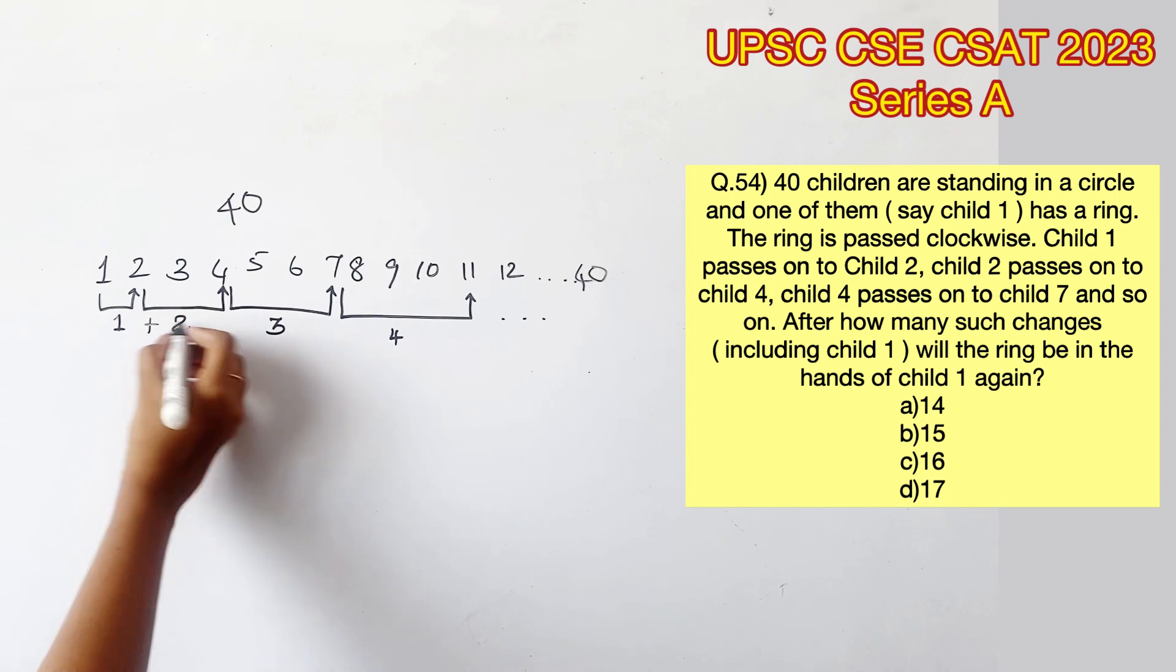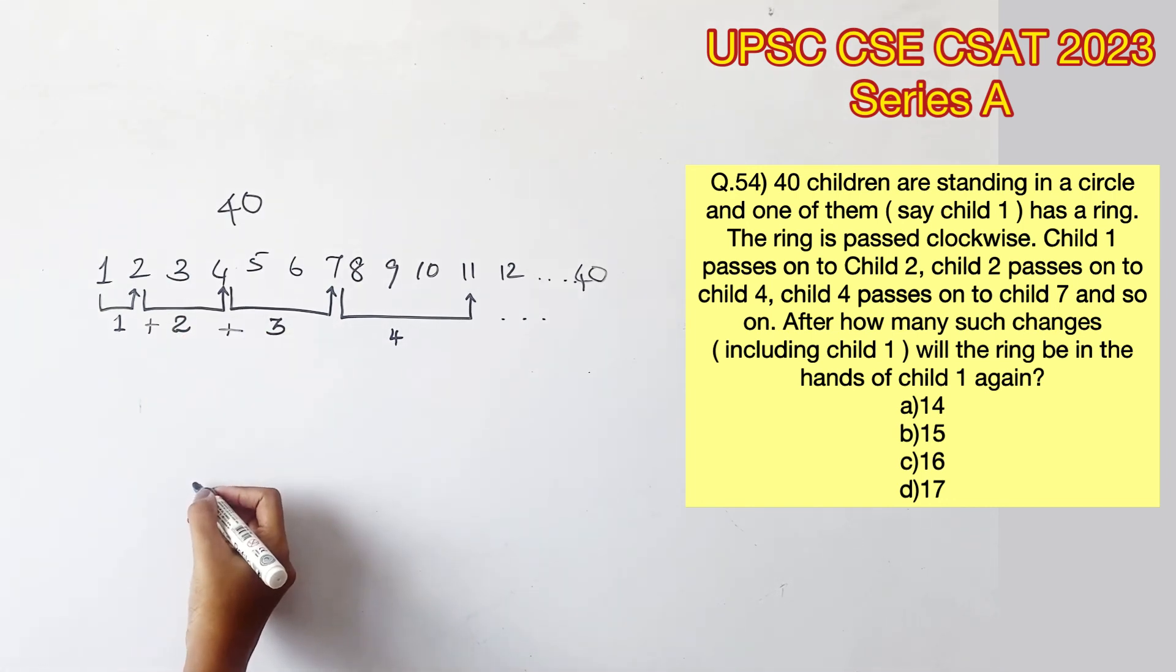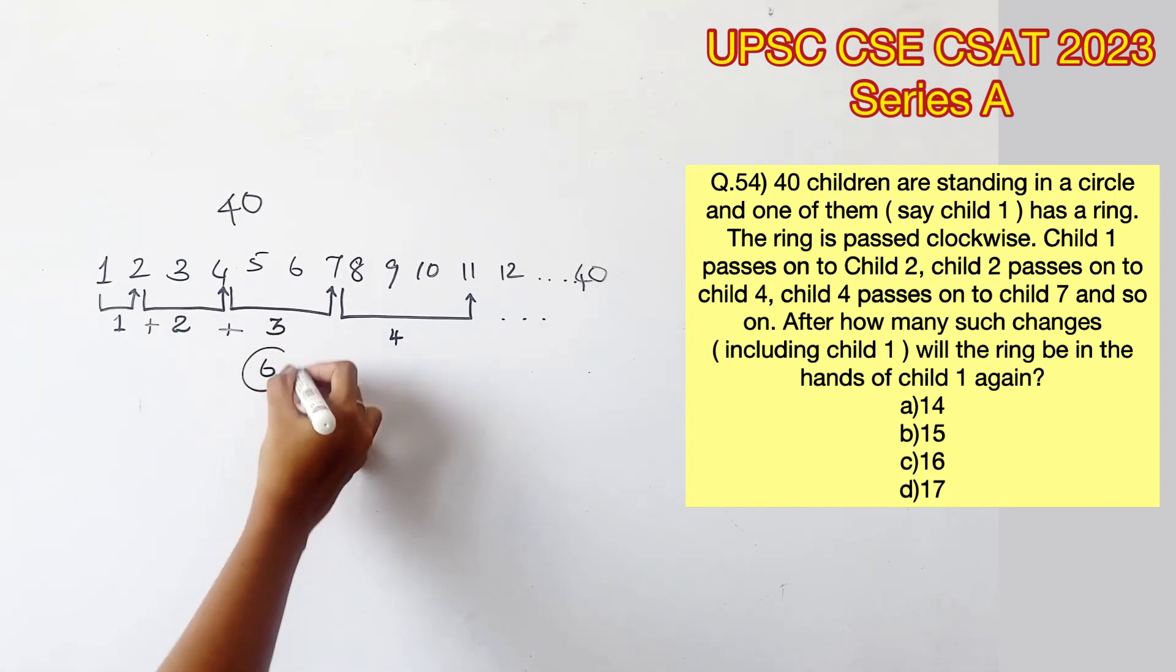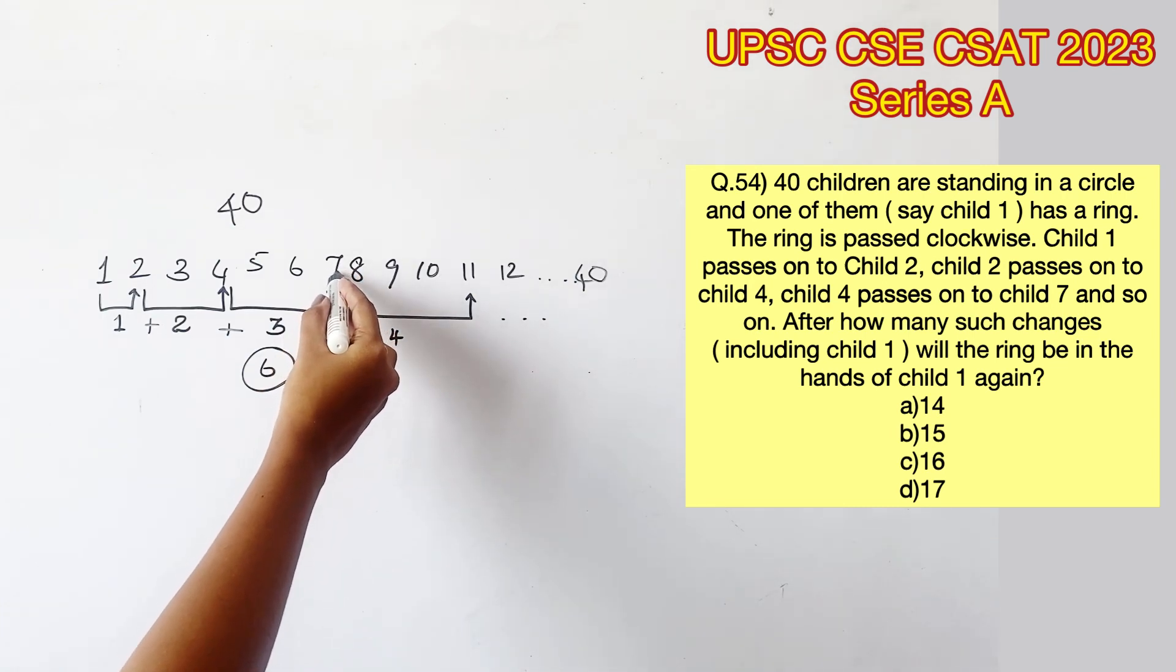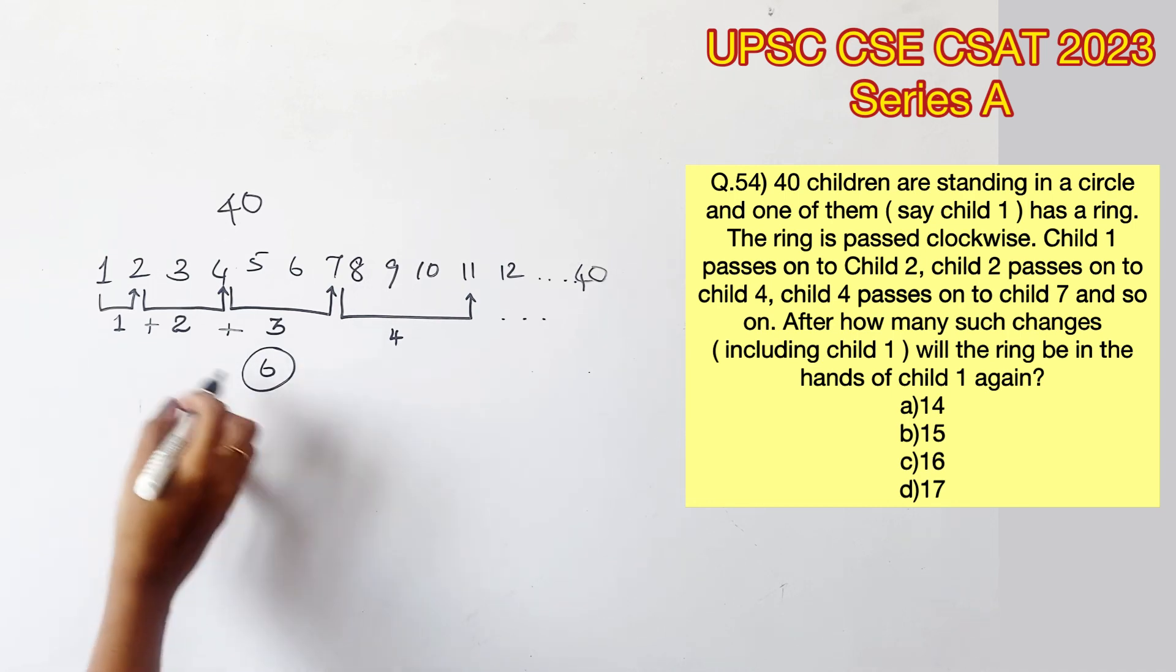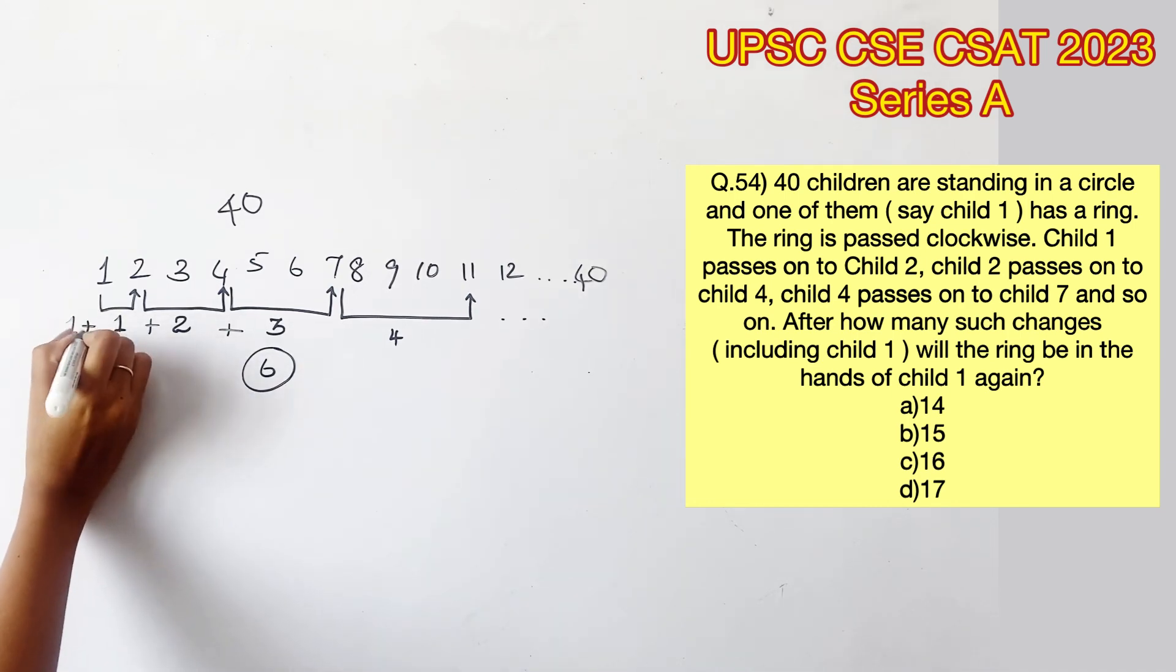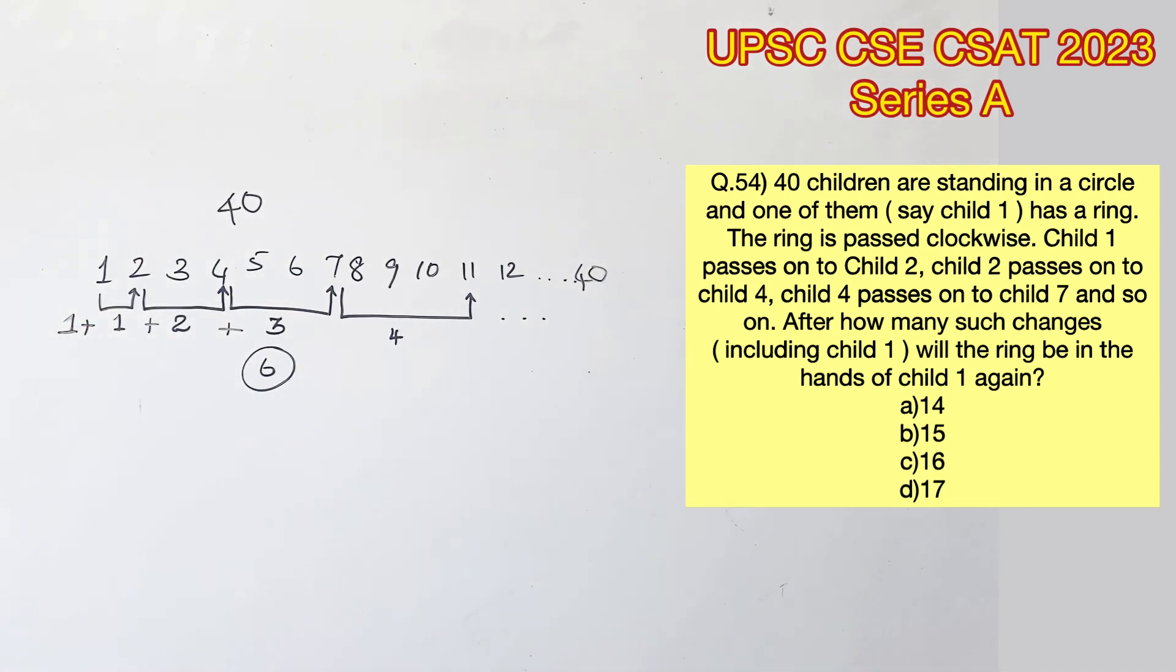Now let's add these values and check if we can reach the position of the child who's holding the ring. 1 plus 2 plus 3 will give us 6, but actually child number 7 is holding the ring, which means we need one more here. Now we can check, adding up these values will provide us with the position of the child who's holding the ring.